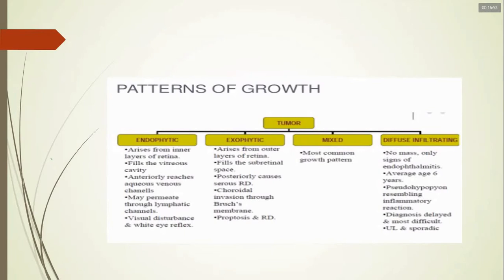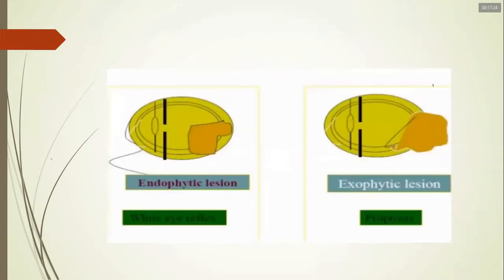The diffuse infiltrated type has masquerade features — presenting like another disease. For example, the patient may present with uveitis or hypopion, but it is actually retinoblastoma; what appears to be hypopion is actually pseudohypopion. In summary, there are four main growth patterns: endophytic, exophytic, mixed, and diffuse infiltrated.